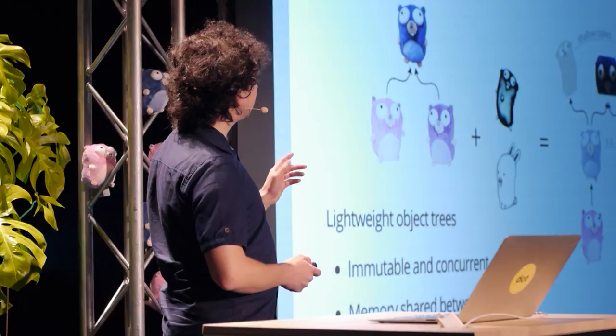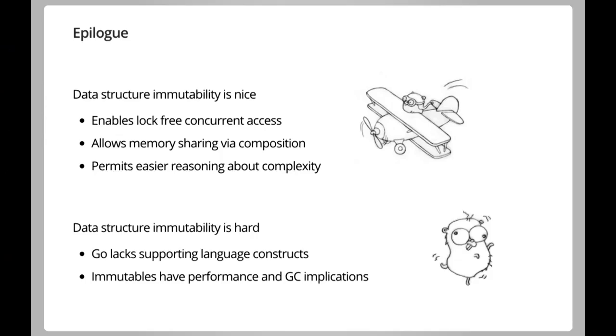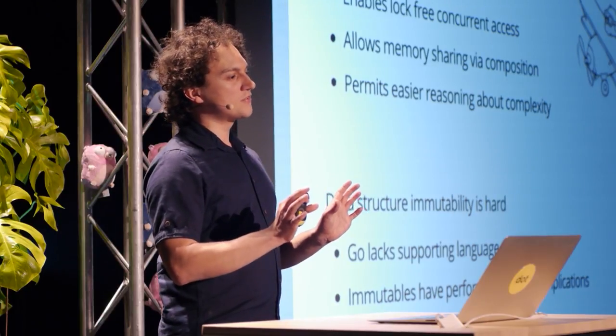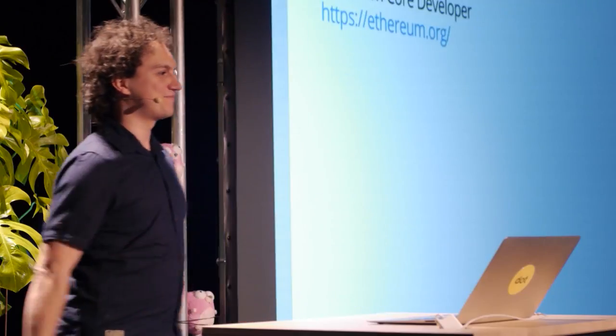This is exactly how blockchains and Ethereum work — I take my old state, modify it to get a new state, and share all of my memory. To sum up: data structure immutability is really nice because you can have concurrent access, share the same memory via composition, and easily reason about complexity — whereas mutability is hard because Go doesn't really support it and it has a performance impact on the garbage collector. The single sentence to remember: whenever you're writing programs and figure you might want to copy a data structure, think about how much data that copy entails — because you might hurt yourself really badly and take 70% of your network offline. In those cases, remember immutability as a possible solution. Thank you very much.